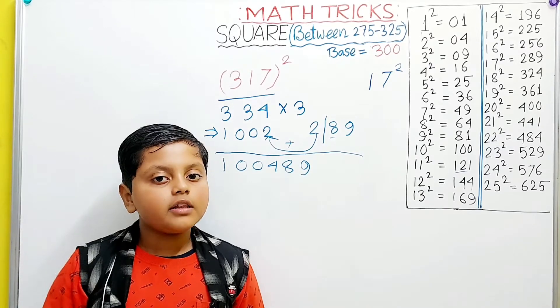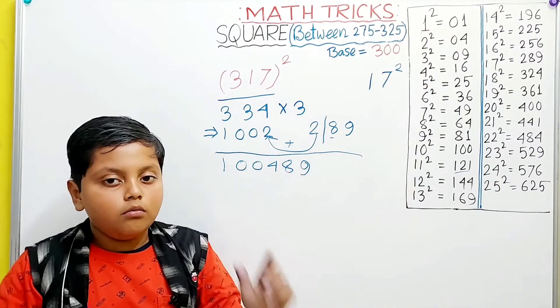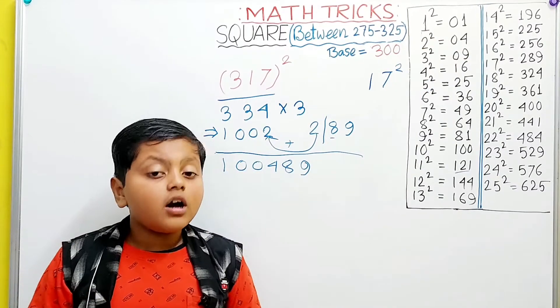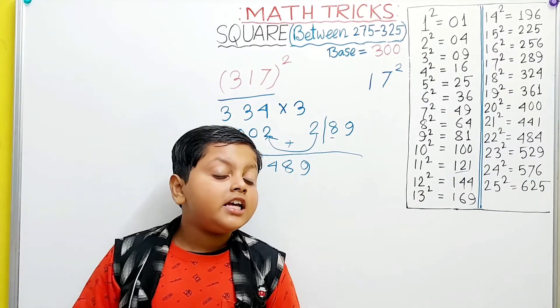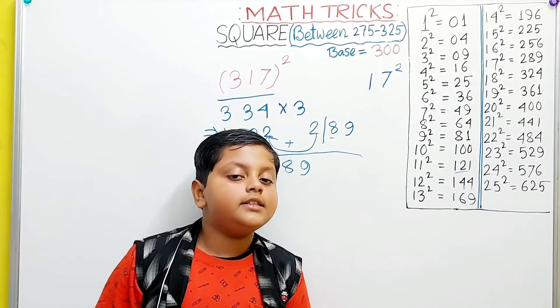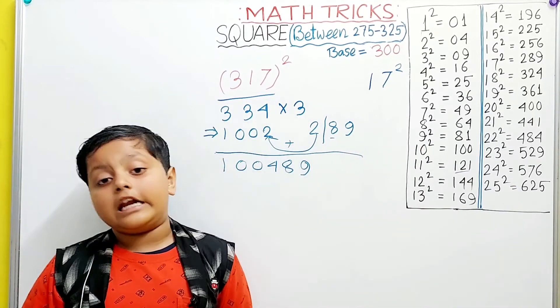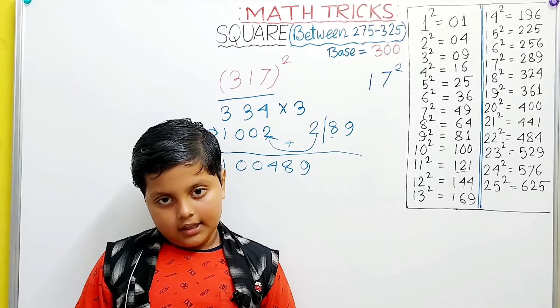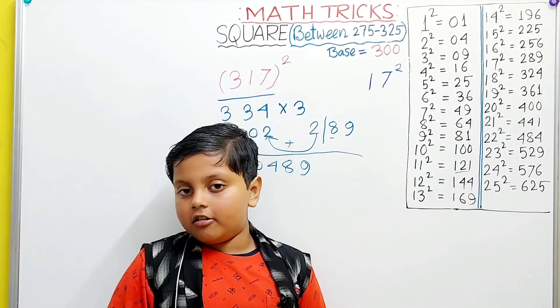Now you can go on with this for any squares you like between 275 and 325. Do a lot of practicing at home because these are going to get even more intense. So be prepared. And also practice these charts because they are really going to come in handy if you want to do these sums. So thank you for watching. Have a good day. Bye bye.